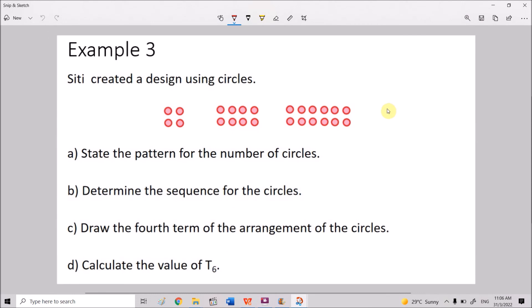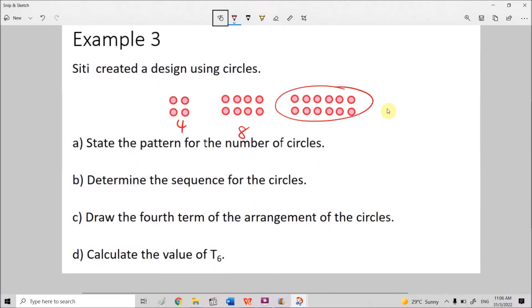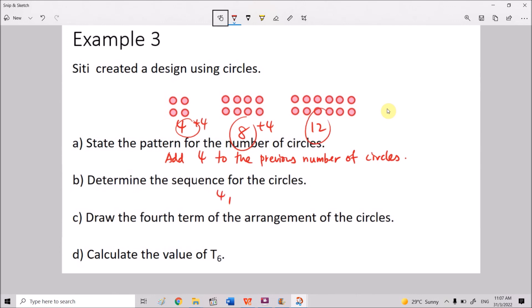For our last example here, you can see that we have three designs. So Siti created a design using these circles. State the pattern for the number of circles. The pattern that we want is referring to the number of circles. So you can see the first design here, we have four circles. The next design, we have eight circles. For the next one, we have 12 circles. So from 4 to 8, we add 4. And we need to confirm, we need to double check whether this is correct or not. From 8 to 12, you add another 4. Hence, adding 4 is the pattern. Hence, the pattern is add 4 to the previous number of circles. Determine the sequence for the circles in terms of the number of circles here. So we just take the 4, 8, and 12. Just write it down. 4, 8, 12.